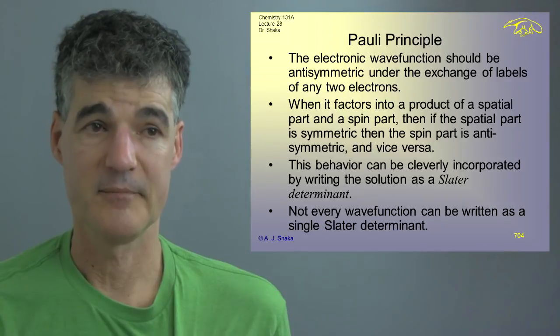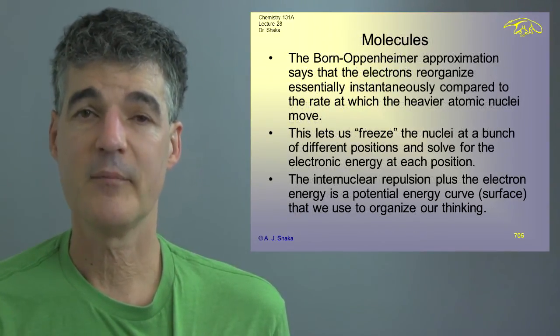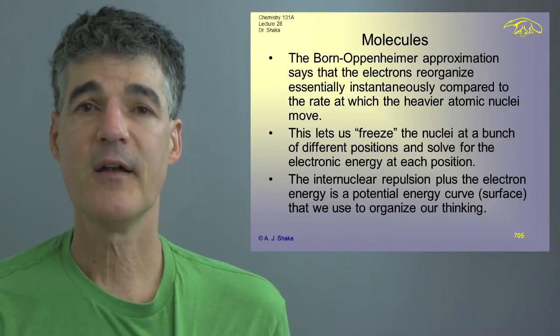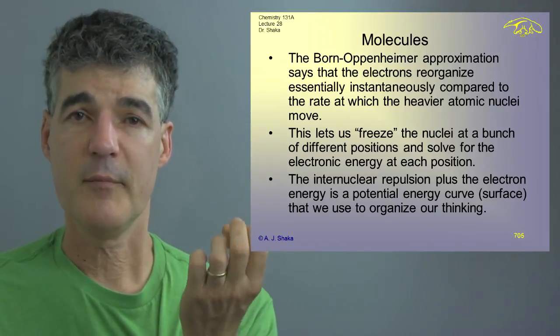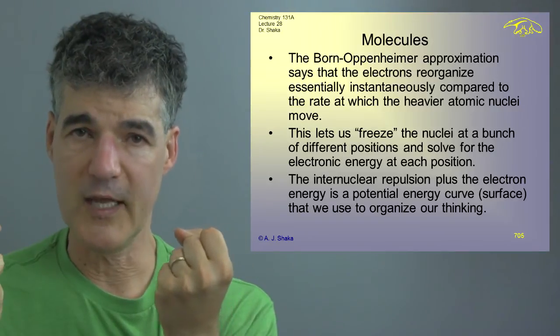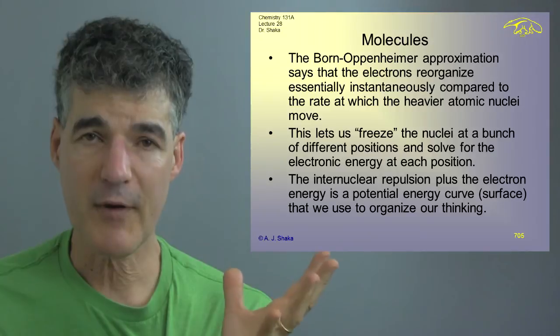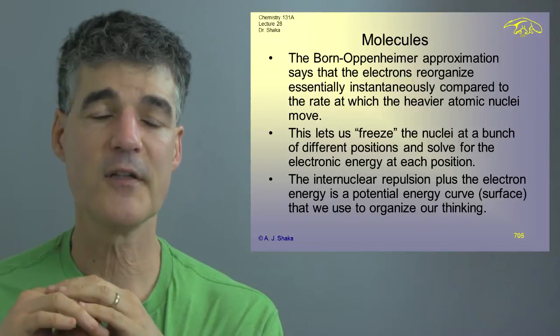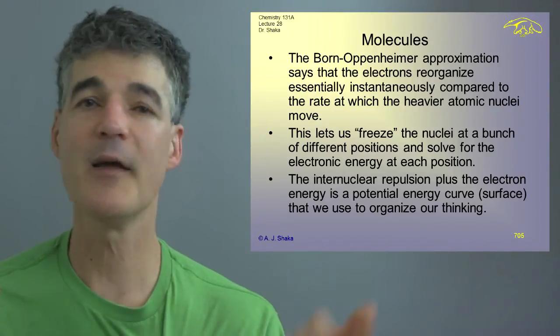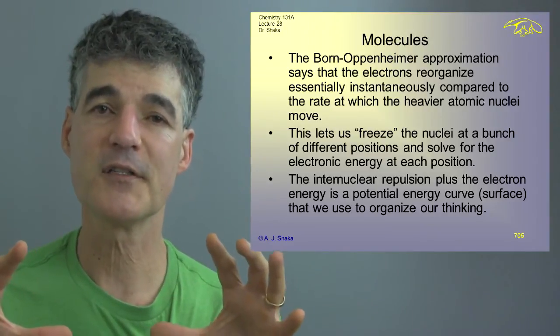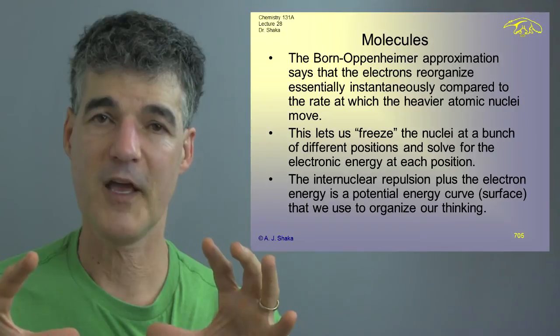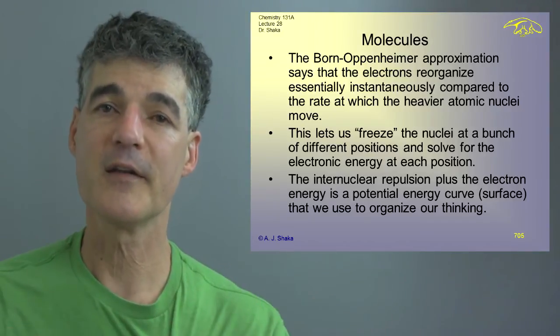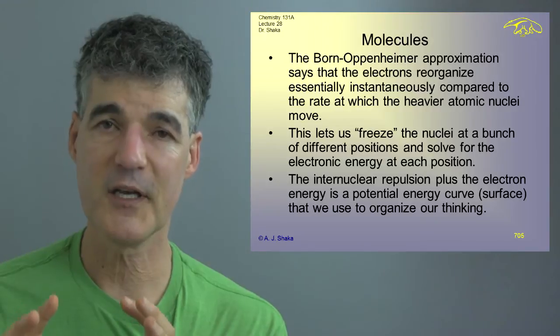Then we talked about molecules and in particular, we introduced the Born-Oppenheimer approximation which basically relied on the physical insight that the nuclei being more massive move slowly and the electrons move very rapidly and the electrons, the second the nuclei move a little, the electrons immediately readjust. They have time to go around the track time and time again and they immediately readjust to whatever the new environment is. If they get squeezed out, they get pushed out because the nuclei are coming together, fine. If the nuclei are going apart and they can hide in there, fine, but they find the right solution essentially immediately.